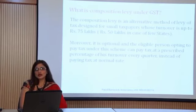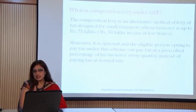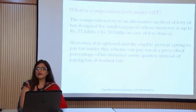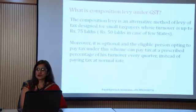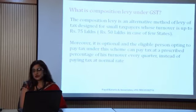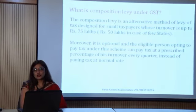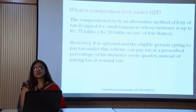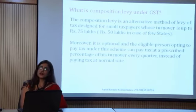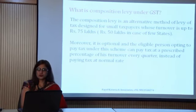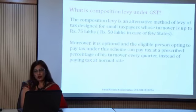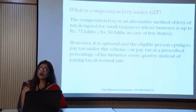When this act was rolled out on 1st July 2017, the limit was 50 lakhs, and 25 lakhs in a few cases. Thereafter there were changes and the limit became 75 lakhs and 50 lakhs in a few cases. Very interestingly, in the 22nd GST Council meeting held on 6th October 2017, it was decided that composition levy can be opted if your aggregate turnover is up to rupees 1 crore.